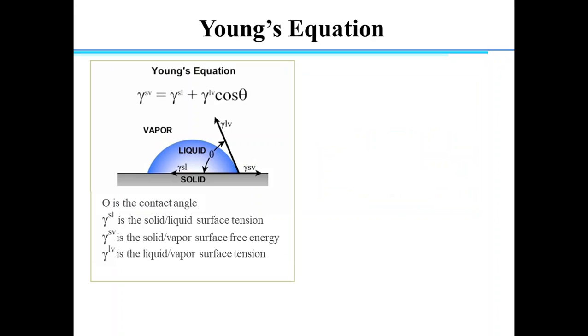Now, coming back to contact angle. Fundamentally, contact angles are a function of the interaction of the surface tensions involved. There are three boundaries to consider when a liquid droplet is in contact with the solid surface: the solid, the liquid, and the vapor surrounding them, which is usually air.